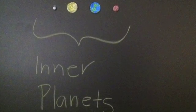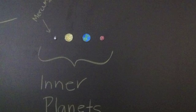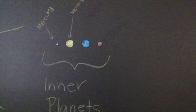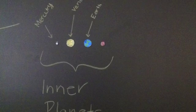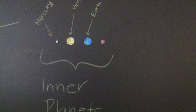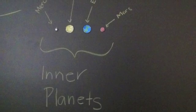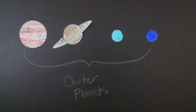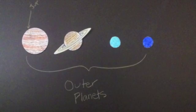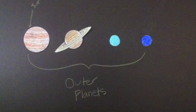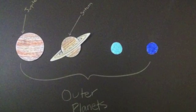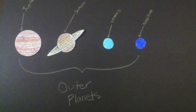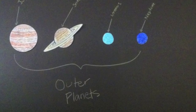There are four inner planets: Mercury, Venus, Earth, our home planet, and Mars. There are also four outer planets, starting with Jupiter, Saturn, Uranus, and lastly Neptune.